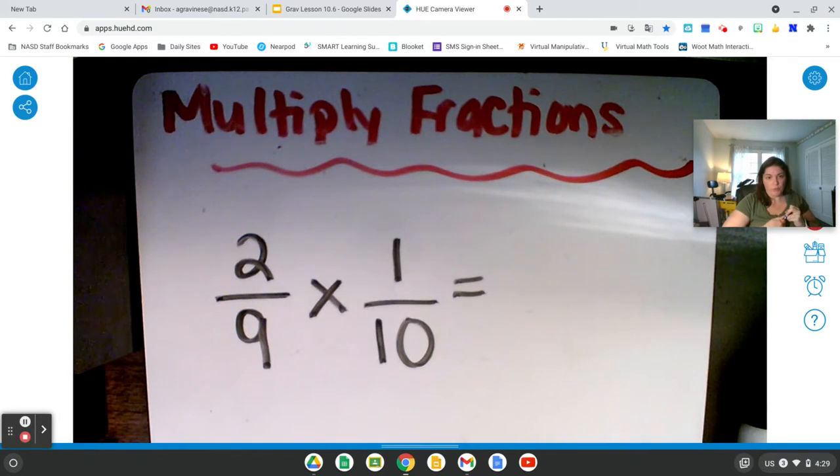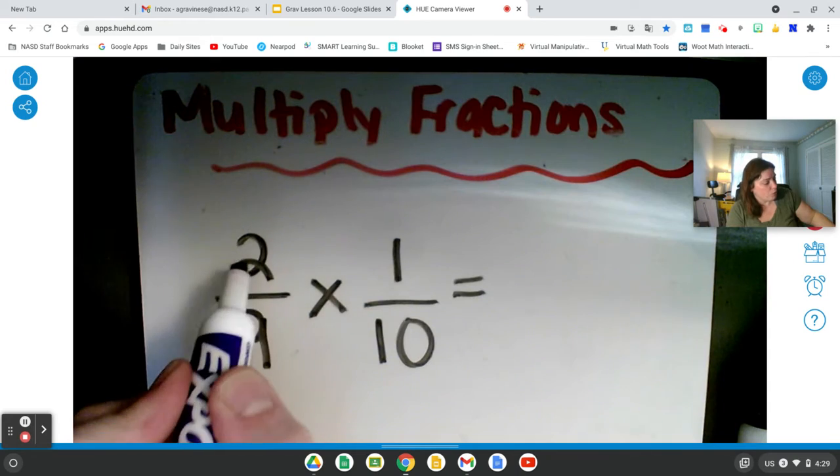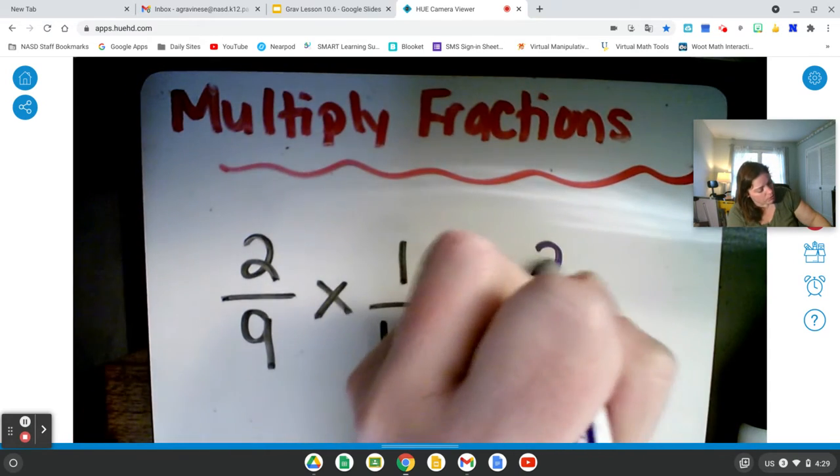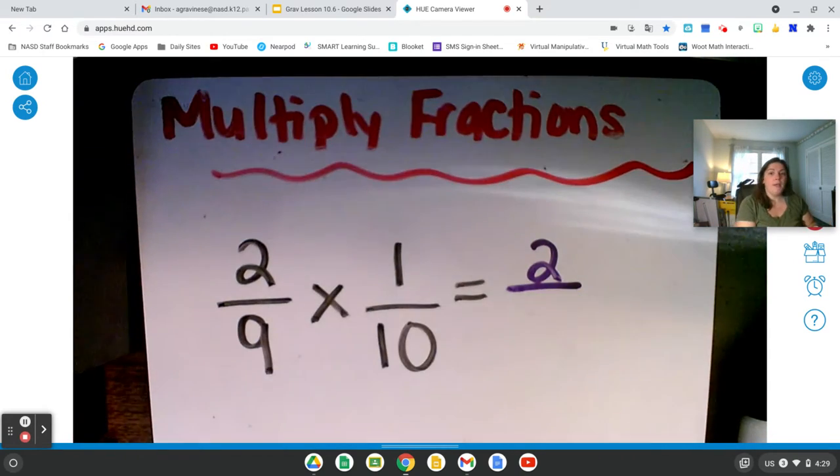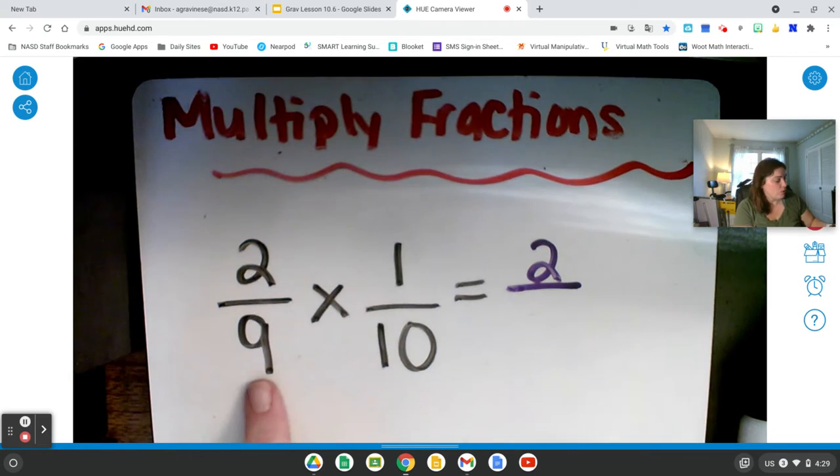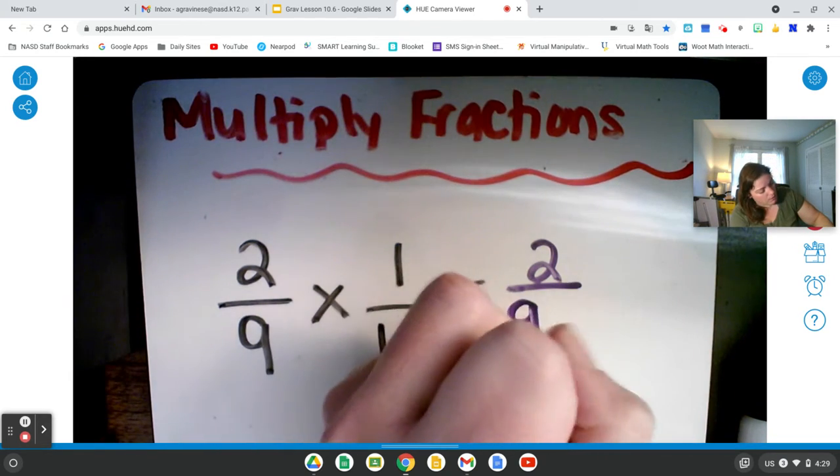So let's just do what we did before. Let's multiply our numerators. 2 times 1 is 2. And now I multiply my denominators. 9 times 10 is 90.